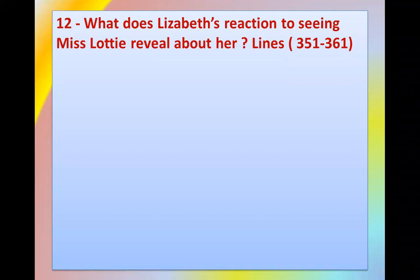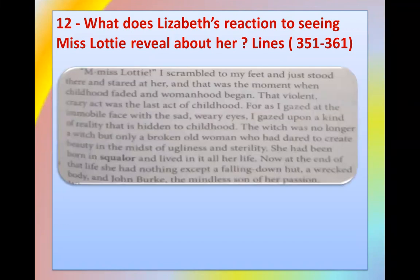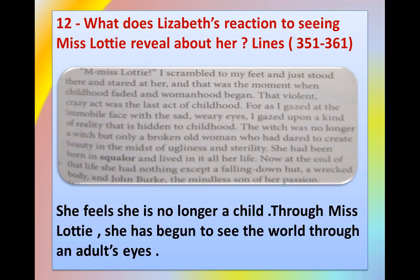Question twelve: what does Elizabeth's reaction to seeing Miss Lottie reveal about her? Answers are found between lines 351 and 361. 'The witch was no longer a witch, but only a broken old woman who had dared to create beauty in the midst of ugliness and sterility.' This refers to Miss Lottie. Elizabeth feels she is no longer a child — she regrets her action. Through Miss Lottie, she has begun to see the world through adult eyes, and she becomes old enough to start realizing how faulty her actions were.